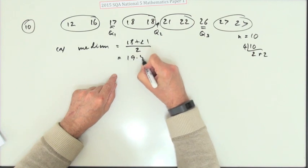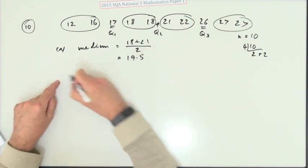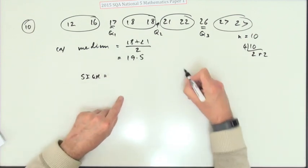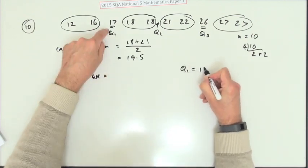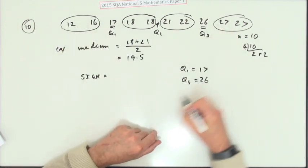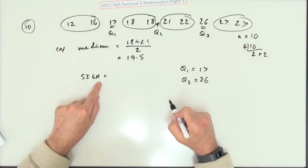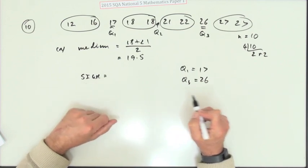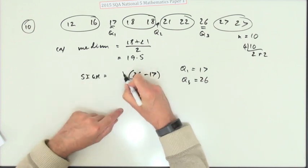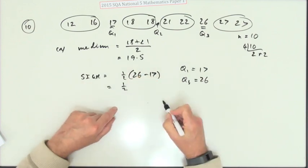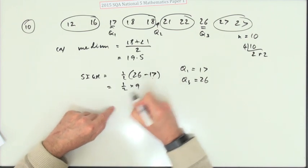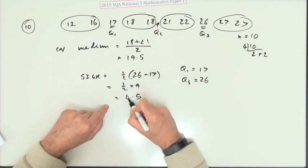The semi-interquartile range. Well, Q1 is 17 and Q3 is 26. So interquartile range means the difference between the highest and lowest quartiles. So that's 26 take away 17, and semi just means half it. So it's a half of nine, so that's 4.5.